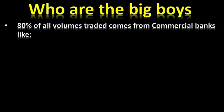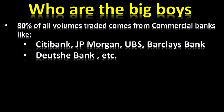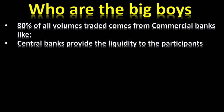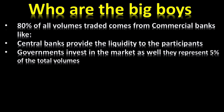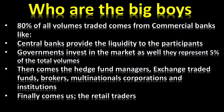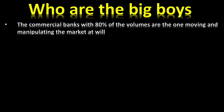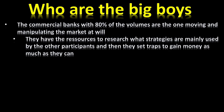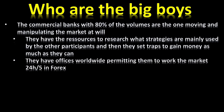Who are the big boys? 80% of all volumes traded comes from commercial banks like Citibank, JP Morgan, UBS, Barclays Bank, Dutch Bank, etc. Central banks provide liquidity to participants. Governments invest in the market as well, representing 5% of total volumes. Then come hedge fund managers, exchange traded funds, brokers, multinational corporations and institutions. Finally, us — the retail traders. The commercial banks with 80% of volumes are the ones moving and manipulating the market at will, having the resources to research what strategies others use and then set traps to gain as much money as possible.